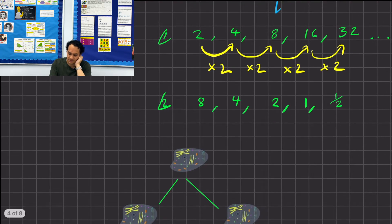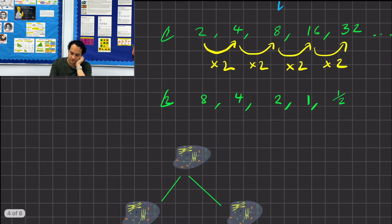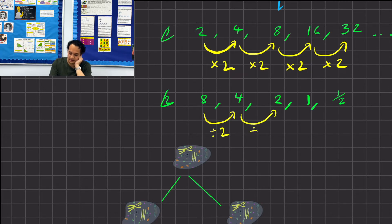A geometric sequence can also go down. If our first term is 8 and our second term is 4, it's dividing by 2. Then 4 to 2 is dividing by 2; 2 to 1, dividing by 2; and 1 to one-half, dividing by 2.